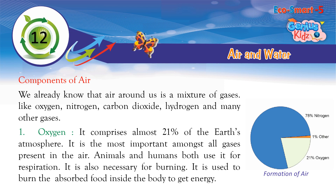Components of Air: We already know that air around us is a mixture of gases, like oxygen, nitrogen, carbon dioxide, hydrogen, and many other gases. Oxygen comprises almost 21% of the earth's atmosphere. It is the most important amongst all gases present in the air. Animals and humans both use it for respiration, and it is also necessary for burning. It is used to burn the absorbed food inside the body to get energy.